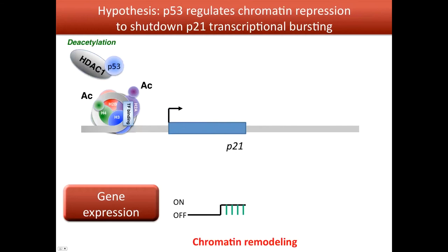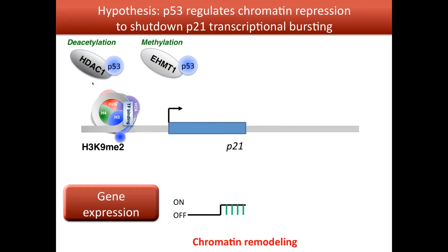p53 can also aid the recruitment of deacetylase enzymes to the nucleosome, causing deacetylation of the histone. Additionally, p53 can bind to EHMT1, which is a methylase enzyme, helping the promoter return to its original off state. So we see that p53 can be involved in all the different states of activation and deactivation of the p21 promoter.